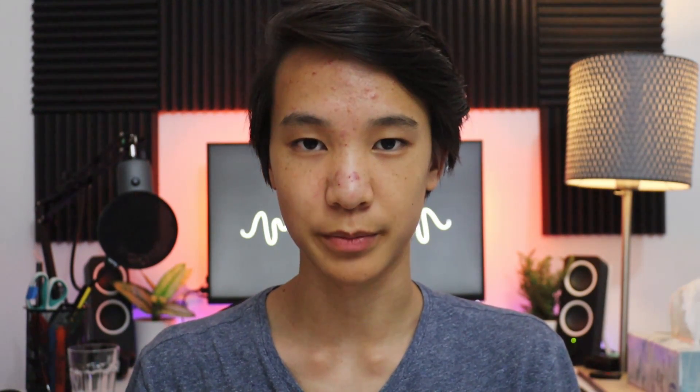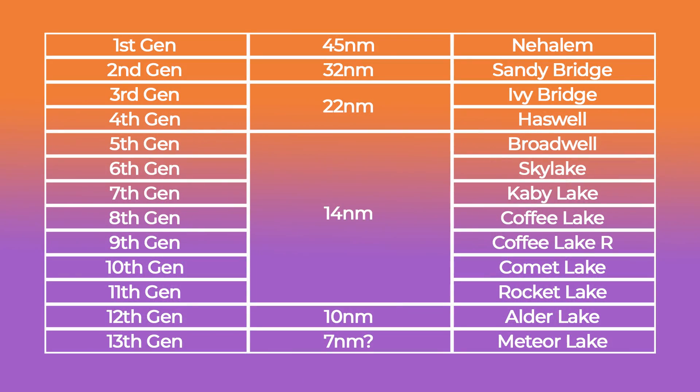Intel used to operate on a tick-tock model where the tick represents a new microarchitecture and the tock represents a refined version, which technically becomes its own separate microarchitecture. First generation Intel was based on the Nehalem microarchitecture on a 45nm process node. Second generation was Sandy Bridge on 32nm, beginning the true tick-tock model. Third generation was Ivy Bridge on 22nm — a die shrink of Sandy Bridge, representing the tock.